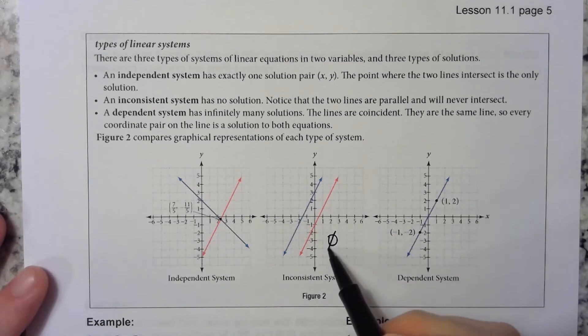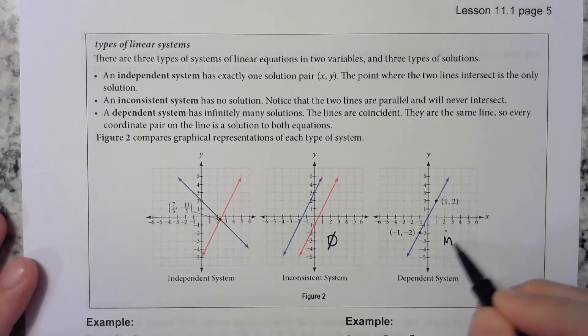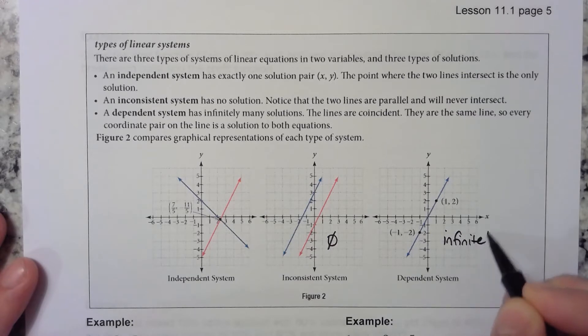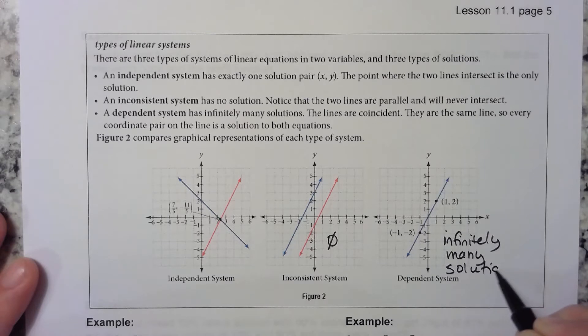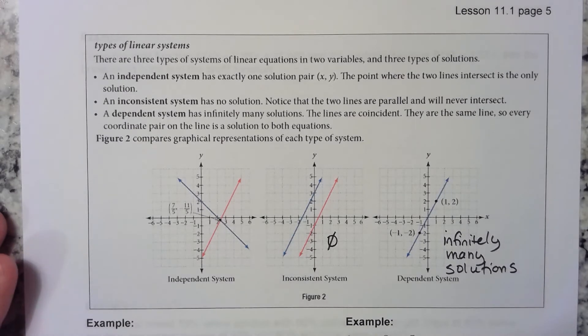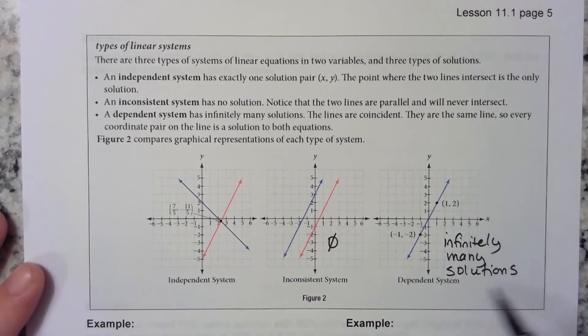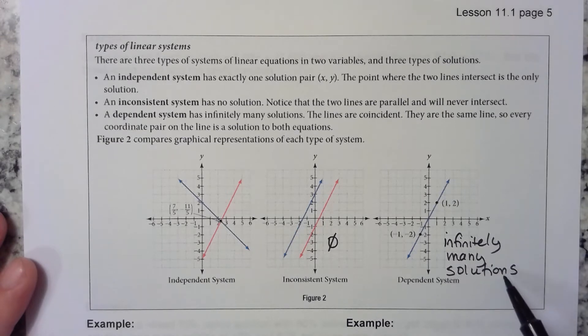So this gives you no solution. This one gives you infinitely many solutions. So a lot of times it's okay to just leave your answer like this. There are infinitely many solutions, but we also need to know how to write something that represents all those solutions. And we're going to do that in one of these following problems.